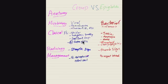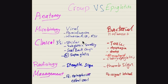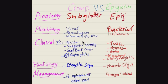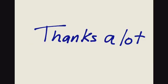This is a summary of the differences between croup and epiglottitis: anatomically, croup affects the subglottis while epiglottitis affects the epiglottis; the cause is viral versus bacterial; clinically, croup presents with the three S's while epiglottitis presents with toxic appearance, dysphagia, drooling, and cherry epiglottis; plus the radiological findings and management differences. Thanks a lot for watching — I hope this was beneficial.